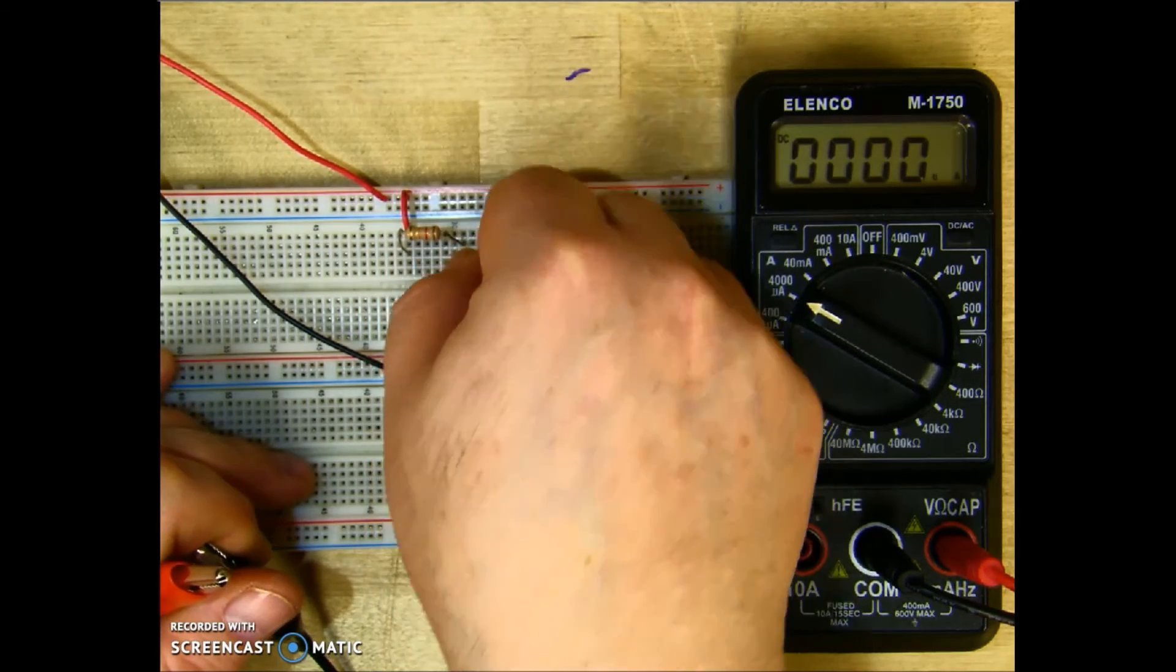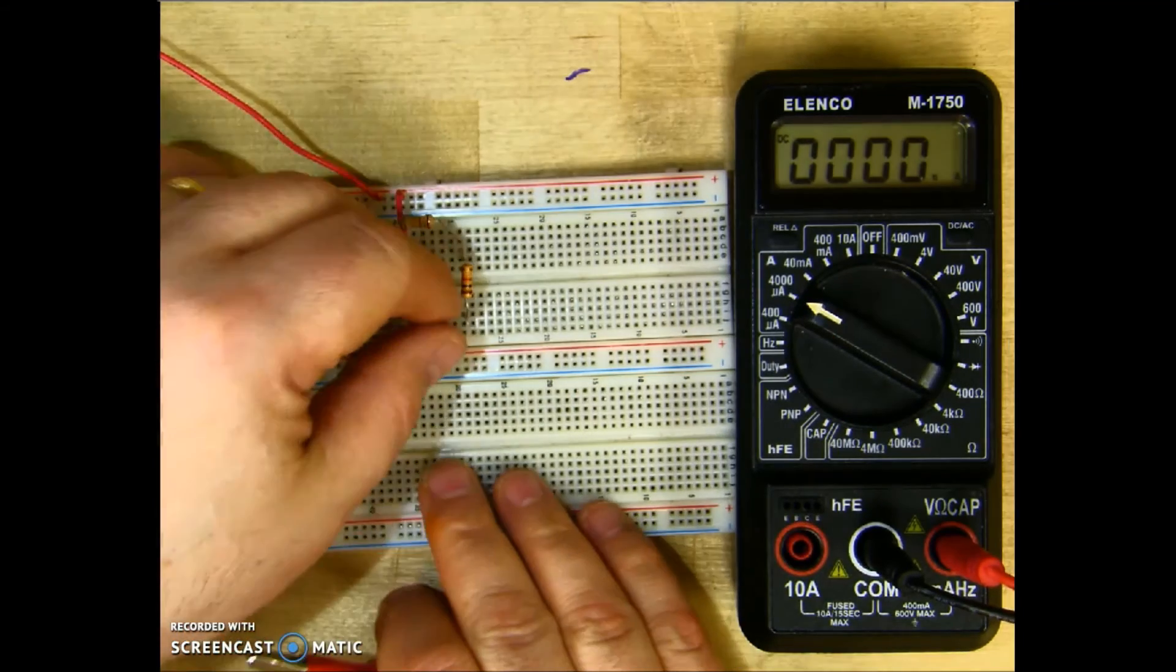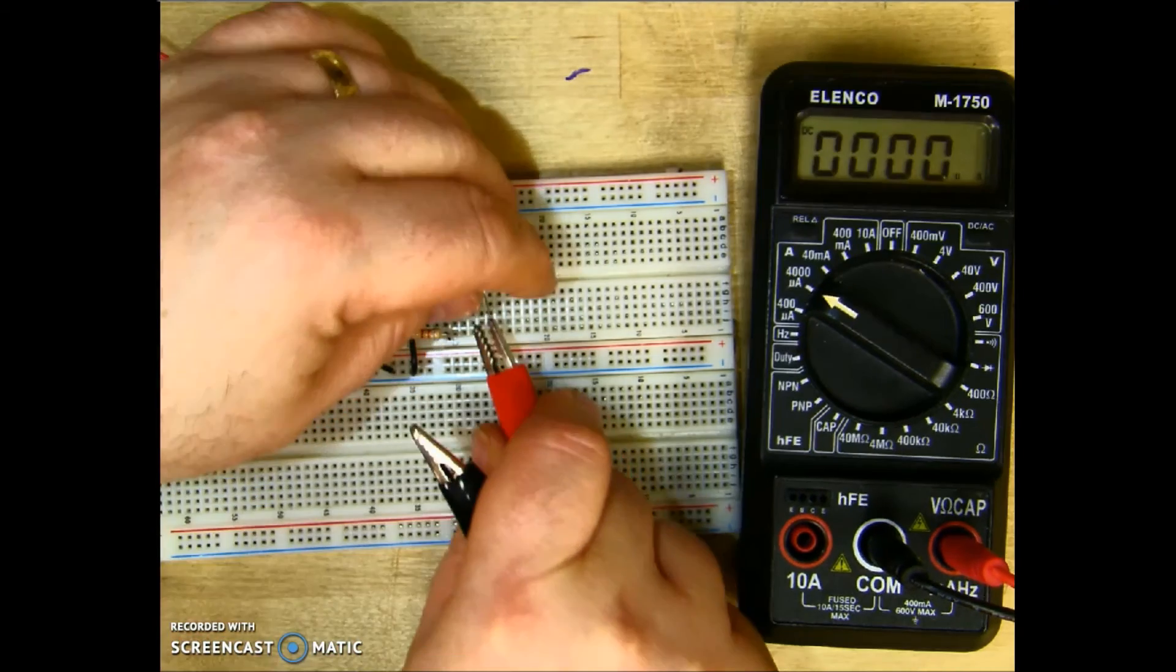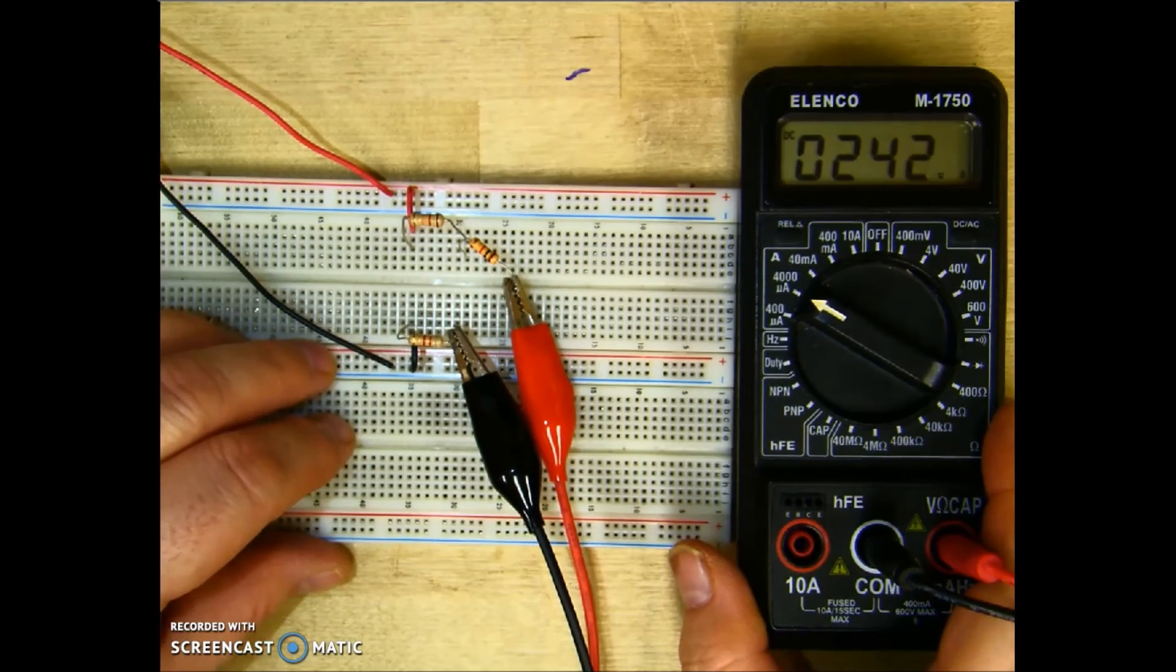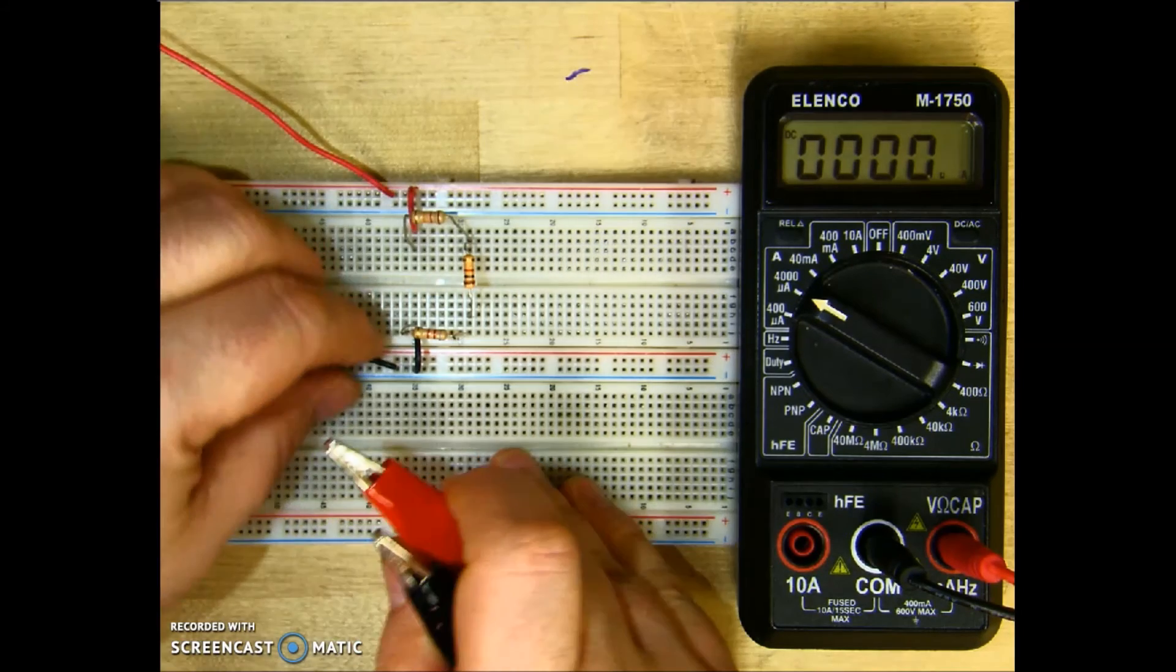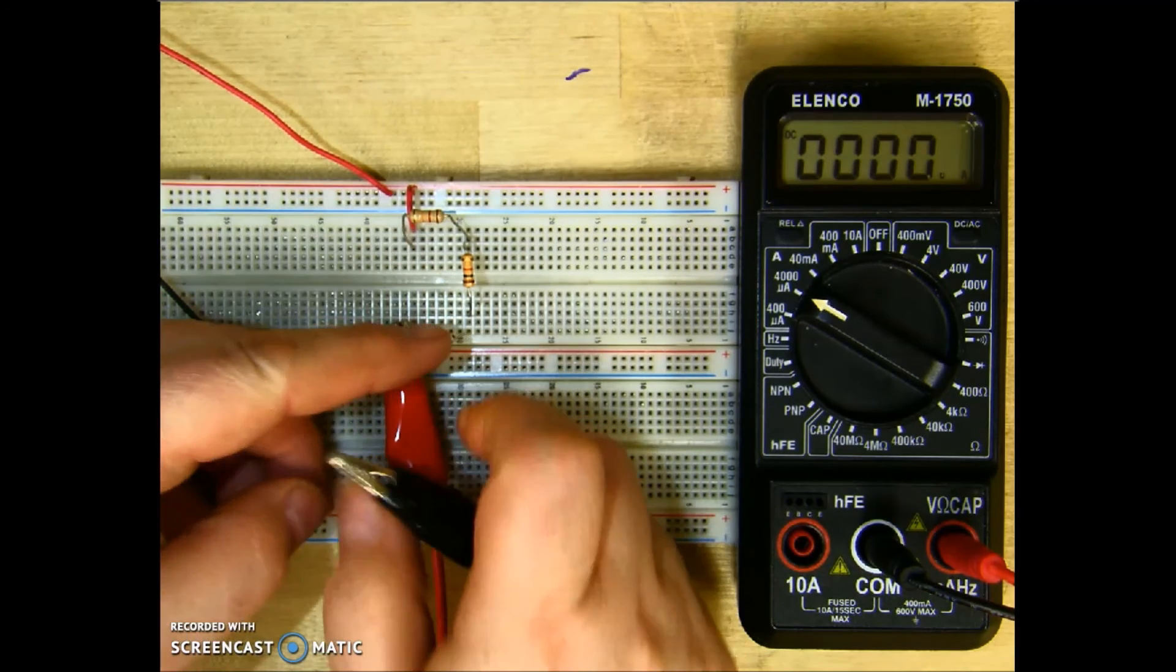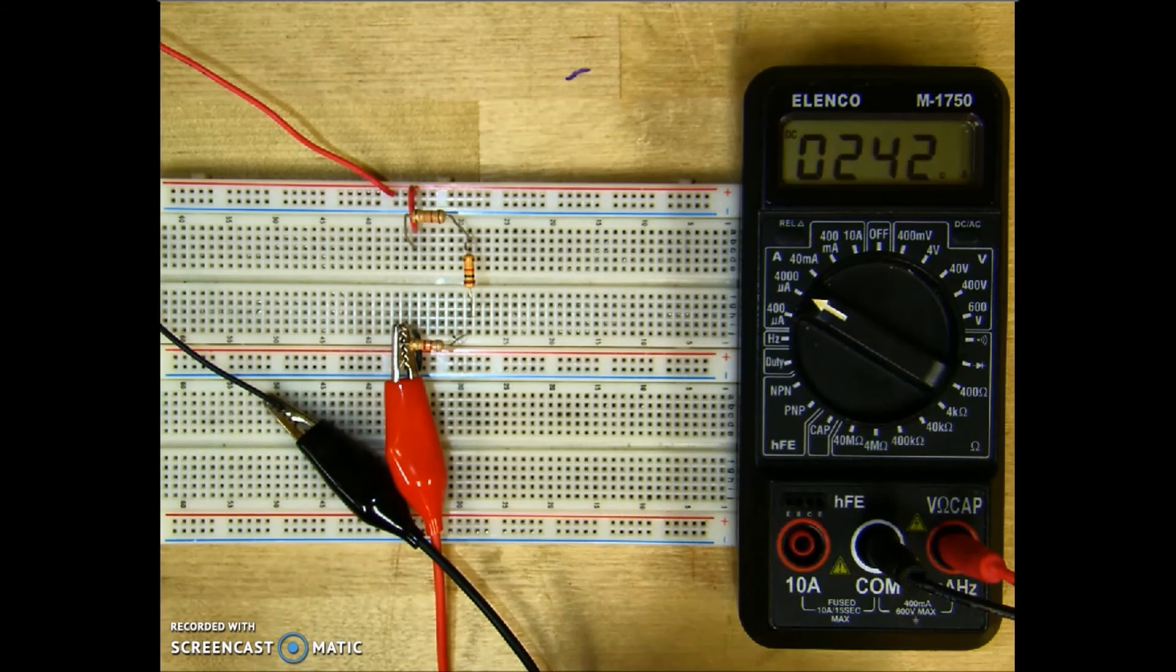Go ahead and put R2 back in the circuit, and I'll break the circuit in between R2 and R3. Connect my positive lead here, my negative here, and again, 242. Put the circuit back together, and then the last one, I'll break it here at the negative terminal. Connect my positive up to the resistor, my negative to the negative terminal, and again, I've got 242 milliamps of current flowing through this resistor.